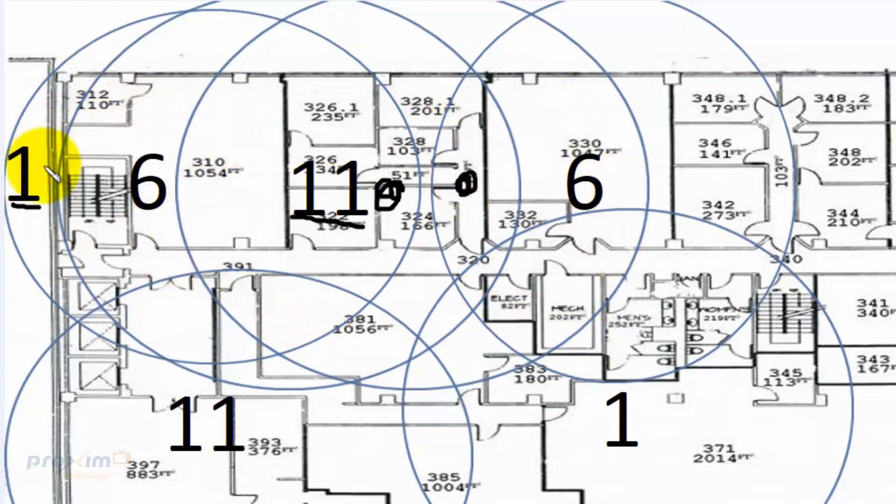In this particular case, you may want to try to power these access points down so you could create that perfect cell they're looking for.